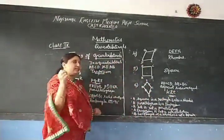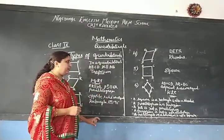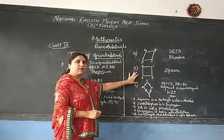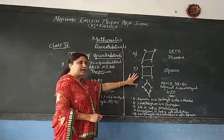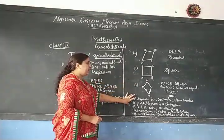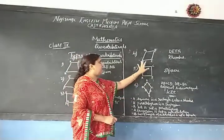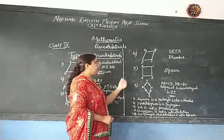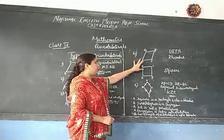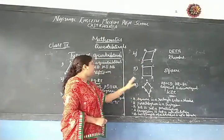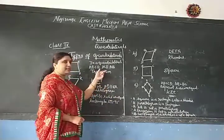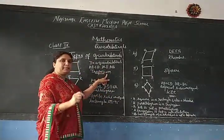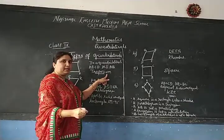These are the types of quadrilaterals. Note that the rhombus, rectangle, and square are all parallelograms. A square is a rectangle and also a rhombus. A parallelogram is a trapezium, but a trapezium is not a parallelogram.